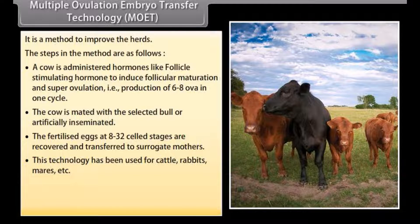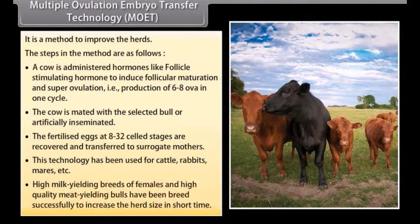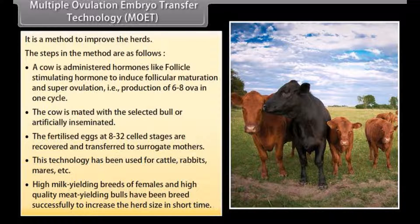This technology has been used for cattle, rabbits, mares, etc. High milk-yielding breeds of females and high quality meat-yielding bulls have been bred successfully to increase the herd size in the short term.